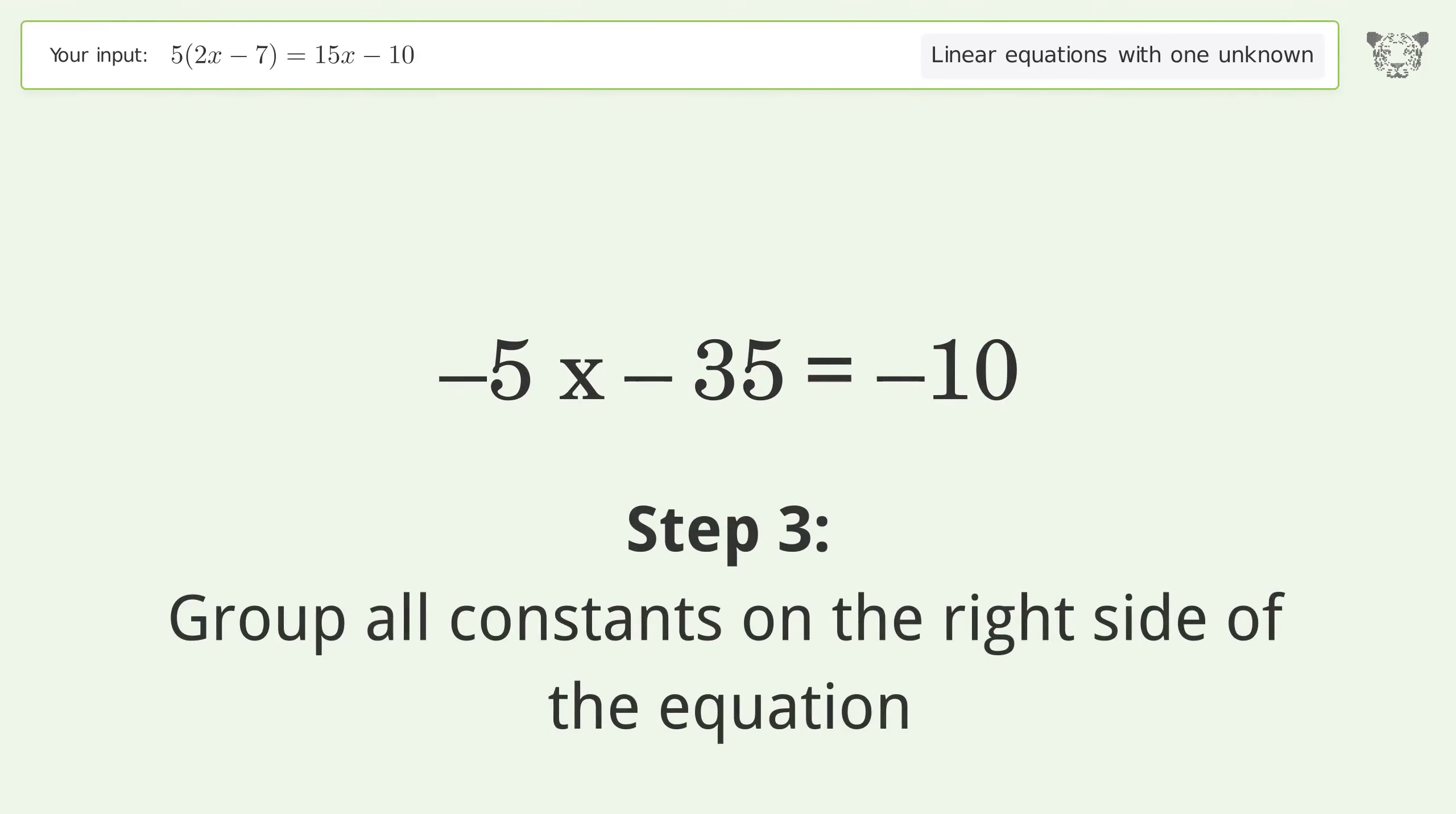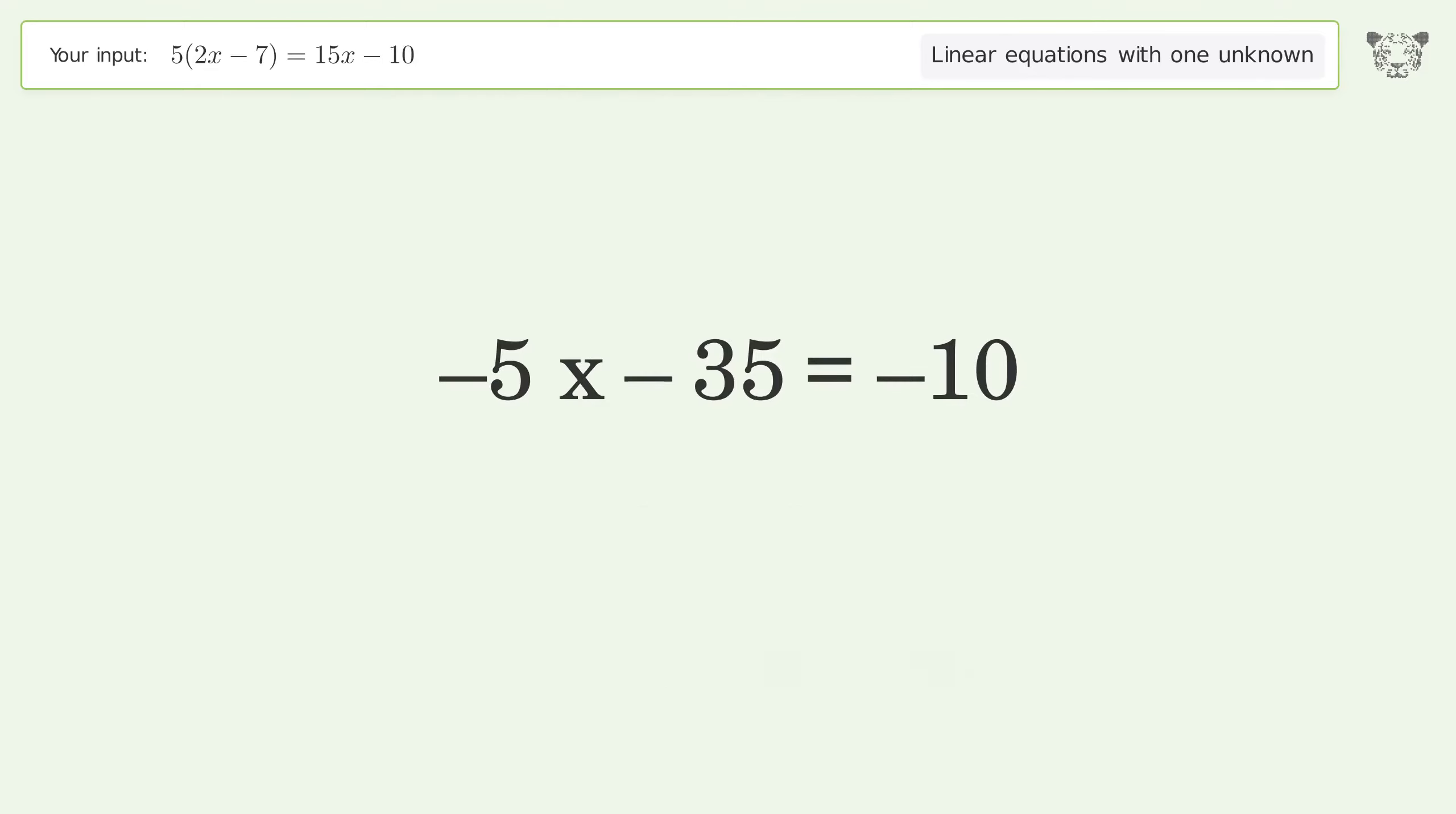Group all constants on the right side of the equation. Add 35 to both sides. Simplify the arithmetic.